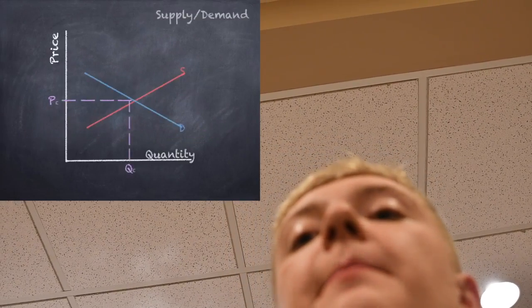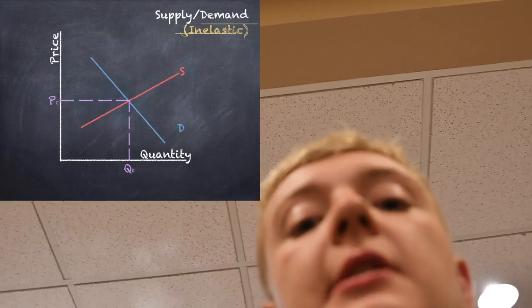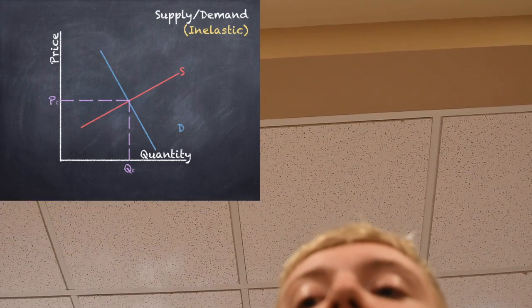A very common misconception is that just because they're the ones who are paying, the producers are always the ones on the hook for paying taxes. But that's not always true, and it depends on the elasticity of the good. The common AP term for this is the tax incidence. The general concept: the more elastic a good is, the more the producer is going to pay. And the more inelastic the good is, the more of the tax is going to be shifted to the consumer.